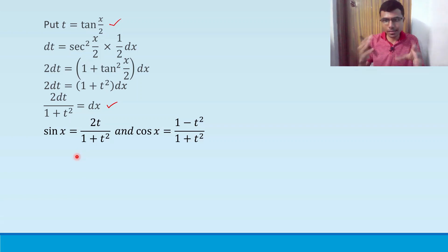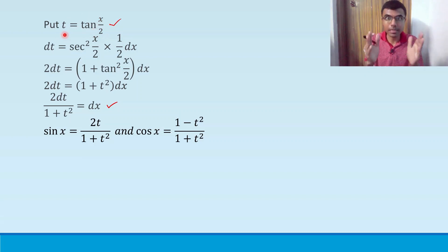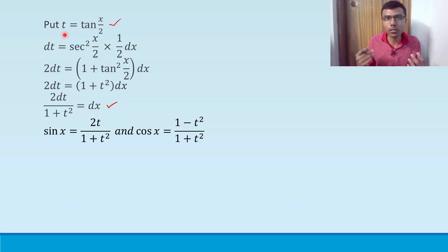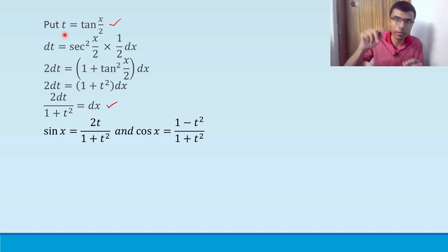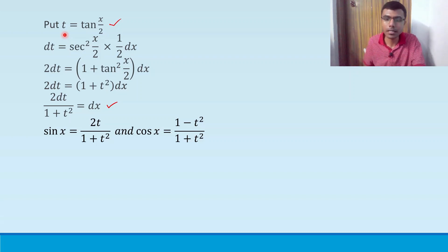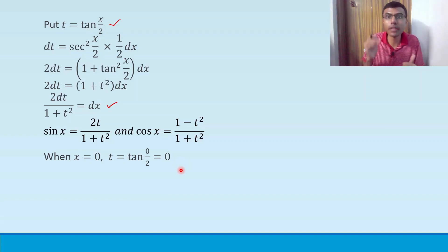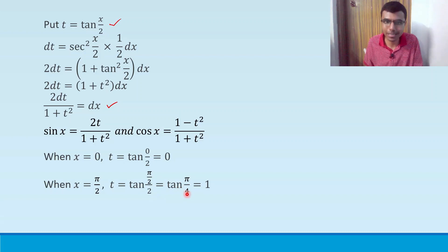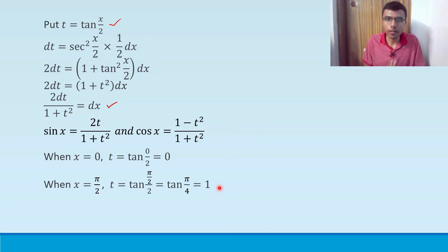Since we are substituting t = tan(x/2), we're replacing x with t, so the limits also need to change. The original limits were 0 to π/2 for x. When x = 0, t = tan(0/2) = tan(0) = 0. When x = π/2, t = tan(π/4) = 1. So the new limits are 0 to 1.